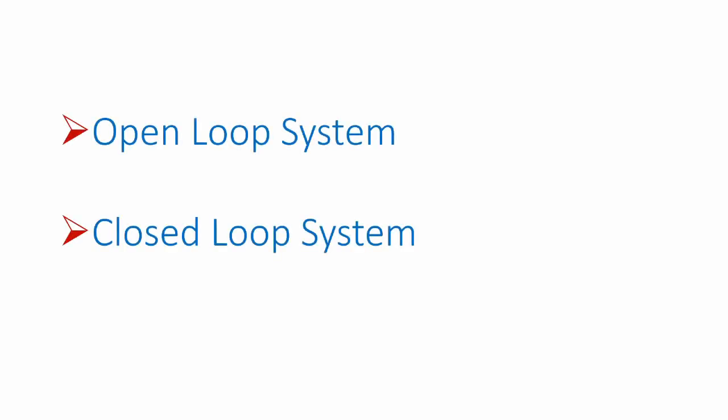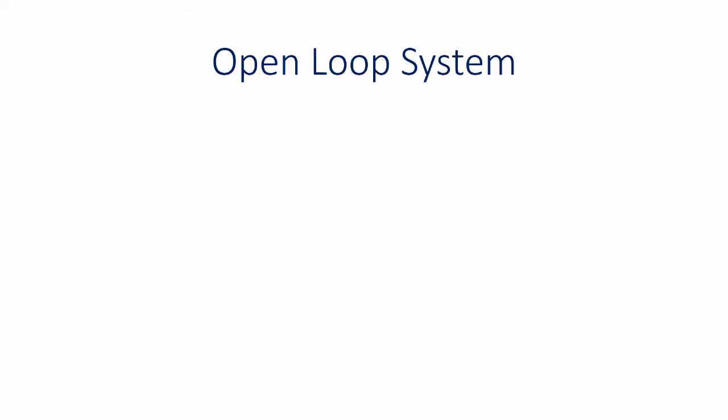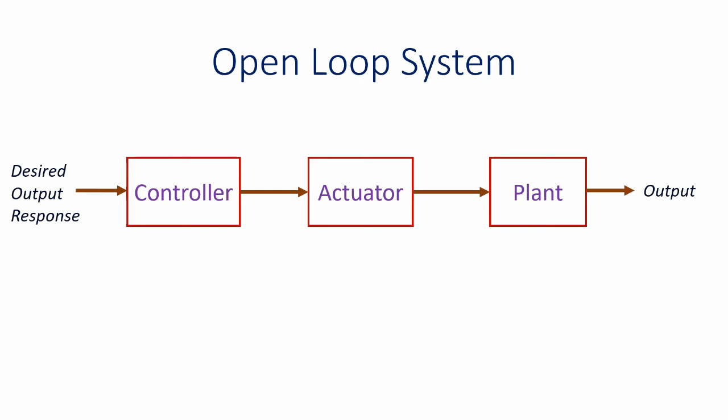The structure of an open loop system is as shown. It contains a plant — the system that needs to be controlled is called a plant — and the desired output response is obtained with the help of a controller which controls the actuator to give the desired response. In this case, the output of the system is not continuously monitored. So once you give the input, you have no control over the system.